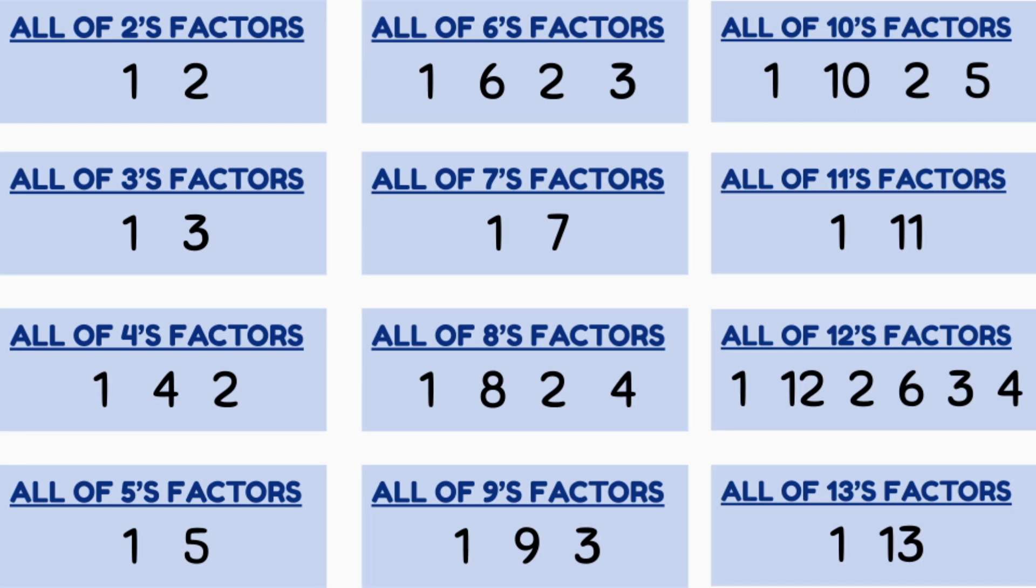Some numbers such as 24 have eight factors, while larger numbers such as 60, 70, 84 and 96 have as many as 12 factors.